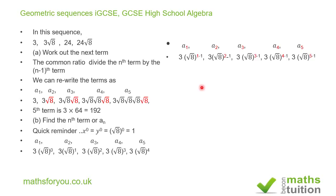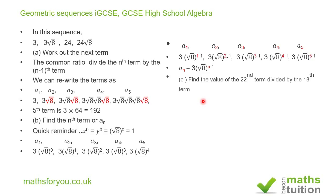So for the nth term, we have 3 times root 8 to the power (n minus 1). That is the nth term, or a sub n. The general formula is 3 multiplied by root 8 to the power (n minus 1), and that is the formula for the nth term.